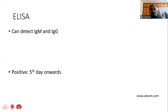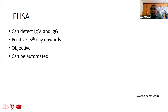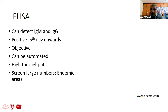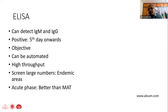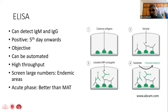ELISA, in contrast, detects both IgM and IgG and can differentiate between them, whereas MAT detects everything. ELISA is positive earlier, it is objective because you get a numerical reading, and it can be automated — useful for high-throughput labs in epidemic situations. In endemic areas and the acute phase, it performs slightly better than MAT: MAT is around 40%+ sensitivity while ELISA reaches 50–60% depending on the cutoff used.